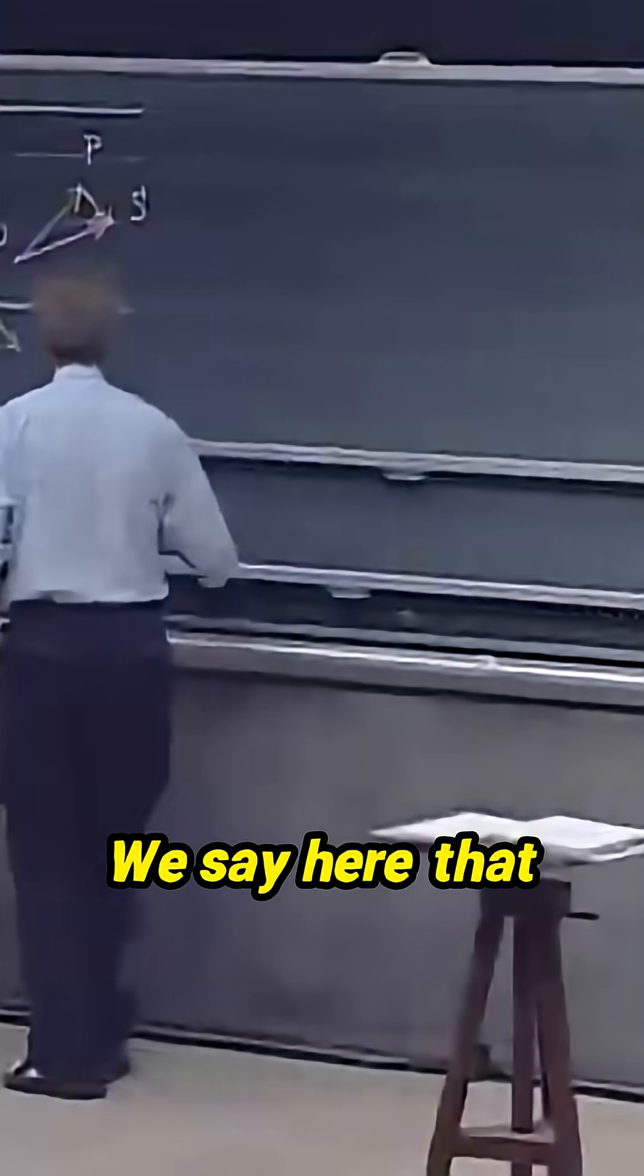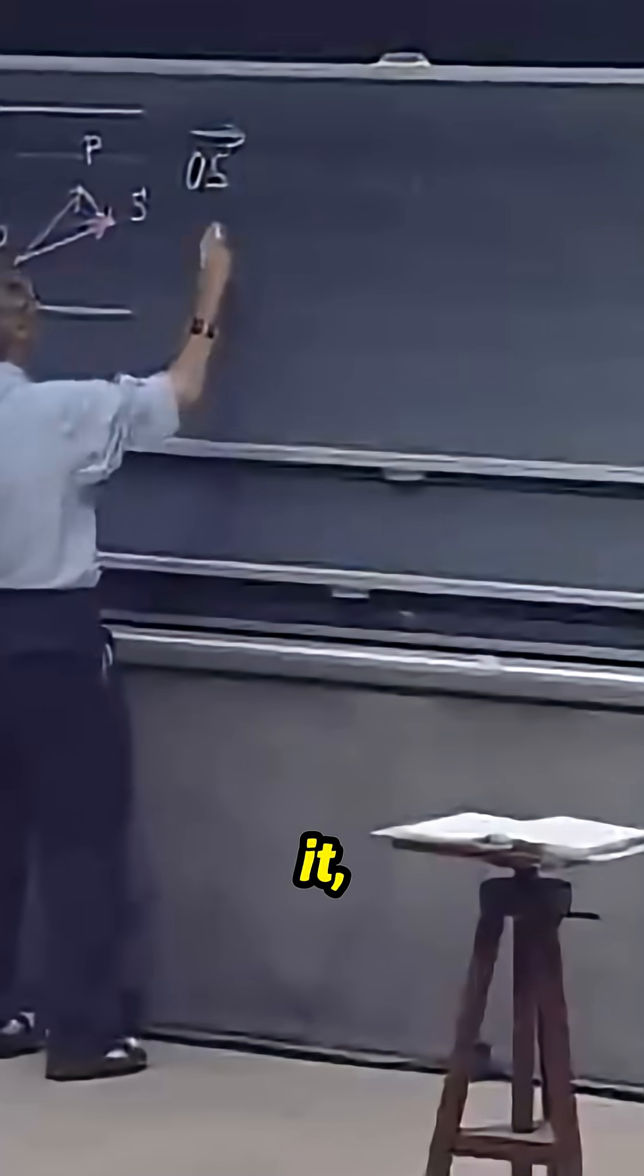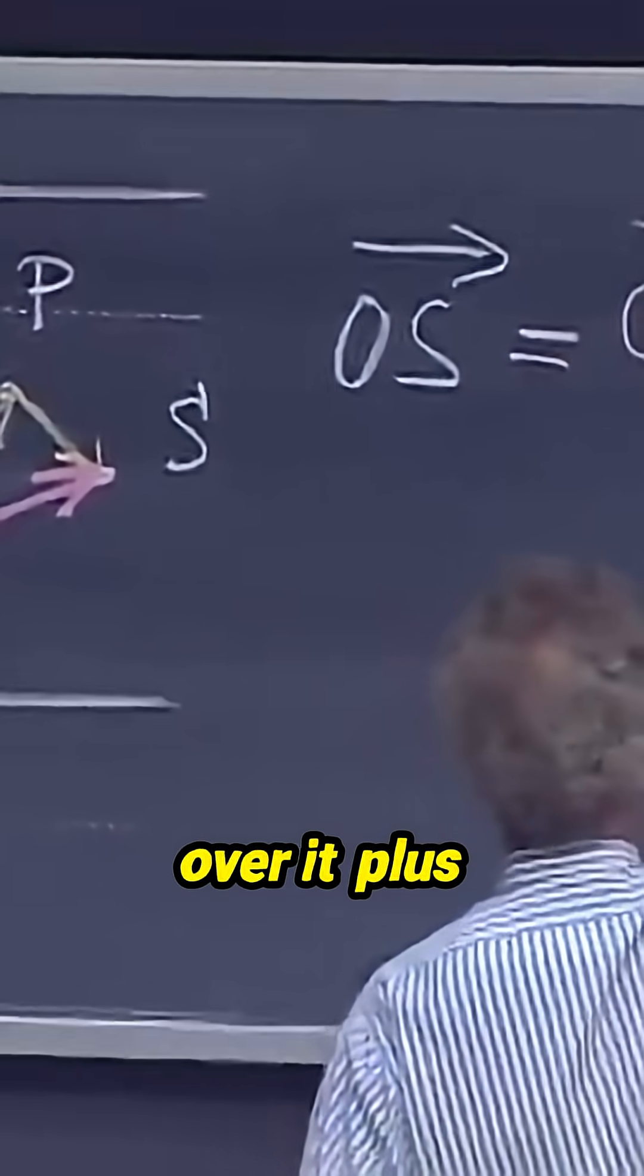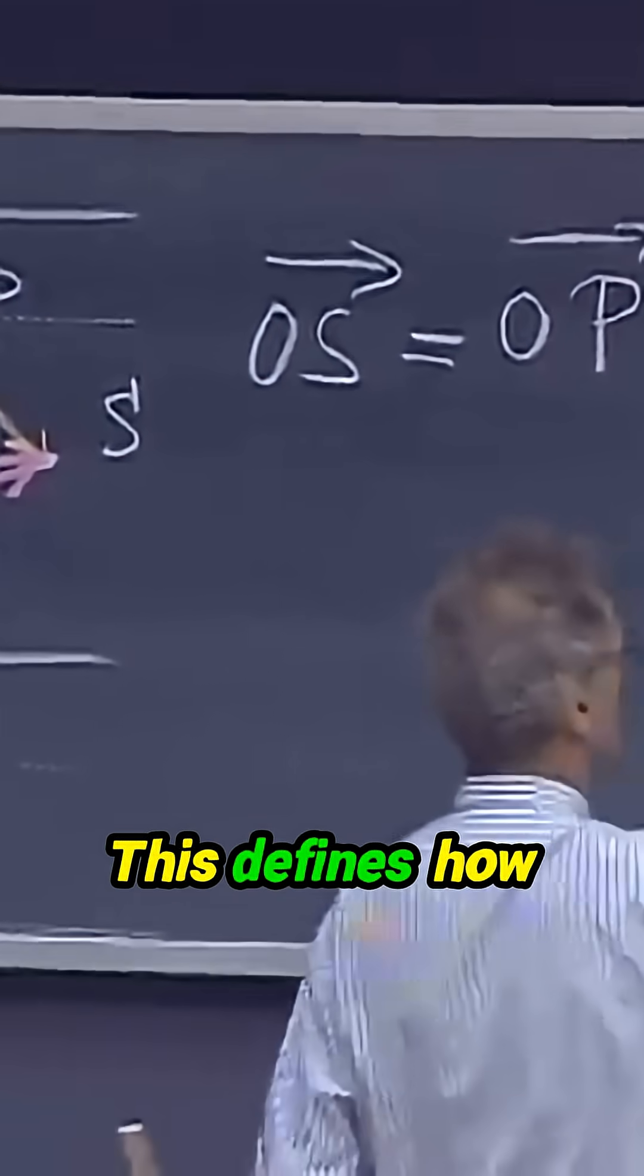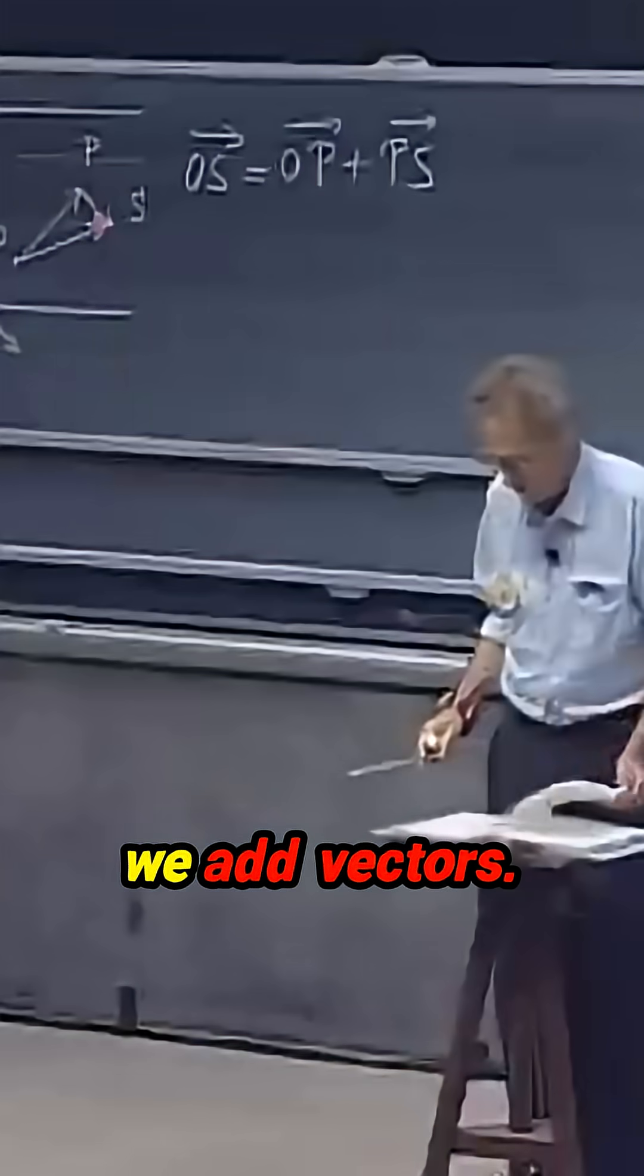We say here that the vector OS, we put an arrow over it, is the vector OP with an arrow over it plus PS. This defines how we add vectors.